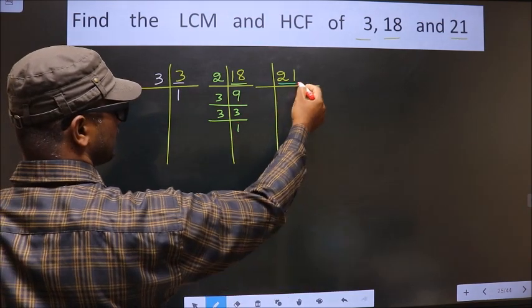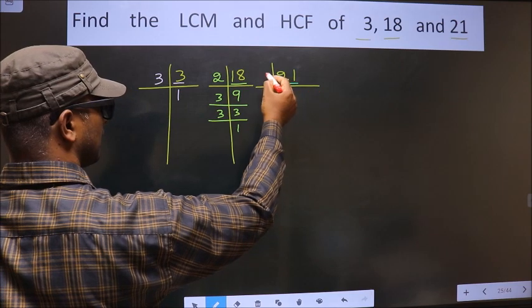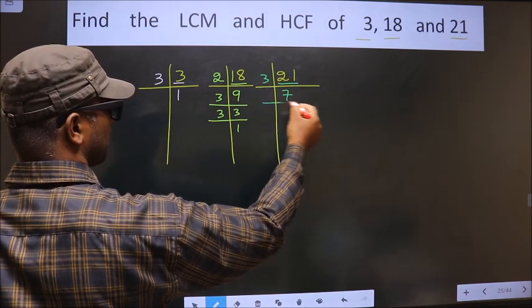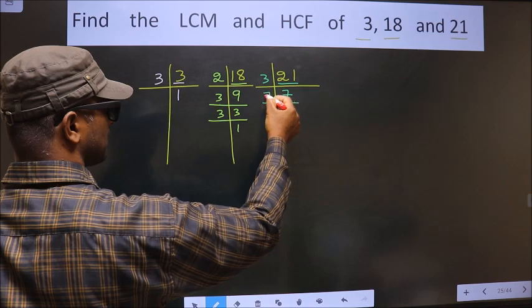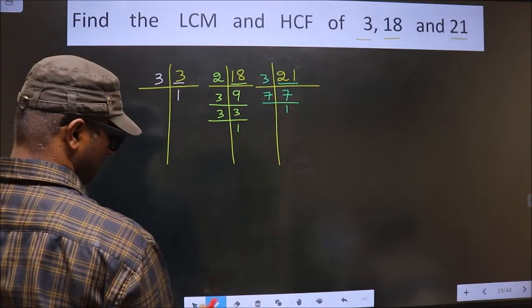Now here we have 21. 21 is 3 times 7. Now 7 is a prime number. So we take 7 once.